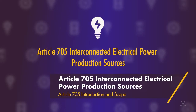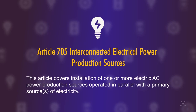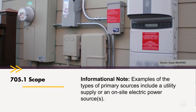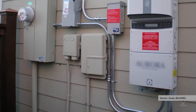This article covers installation of one or more electric AC power production sources operated in parallel with a primary source of electricity. What's a primary source of electricity? There's an informational note for that. Examples of types of primary sources include utility supply or an on-site electric power source — it could be a large diesel generator on an island, for instance, that we're interconnecting with as the primary source. But most often, in most of the systems in the United States, the primary source is going to be the utility.